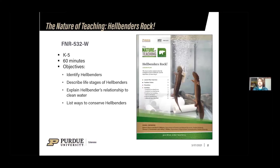This lesson focuses on kindergarten through fifth grade. It should take between 45 and 60 minutes to complete and has several simple objectives. We want students to be able to identify hellbenders and describe their life stages — their life cycle. We also want students to be able to explain their relationship to clean water and finally list some ways to help conserve hellbenders. I'm going to run through some basic background information on hellbenders and amphibians and then turn it over to Becca for a video.